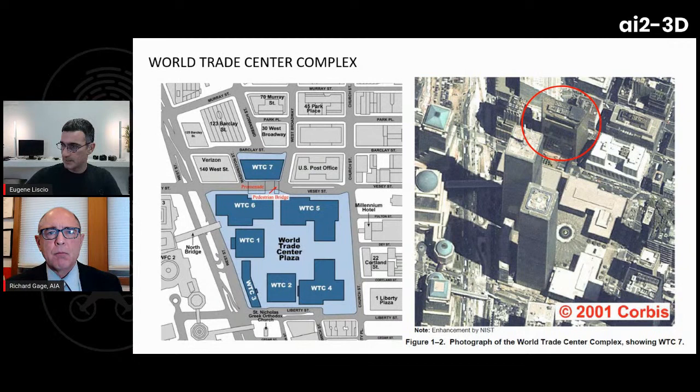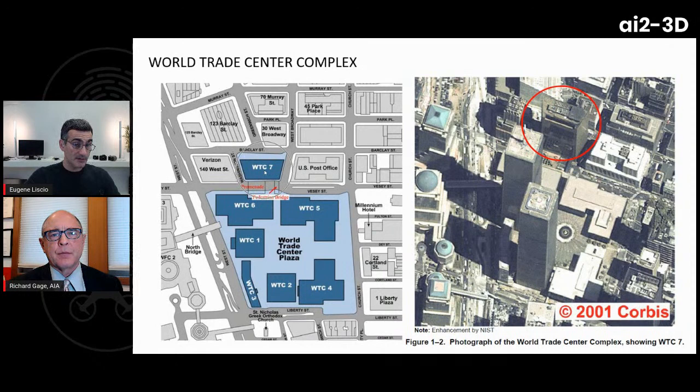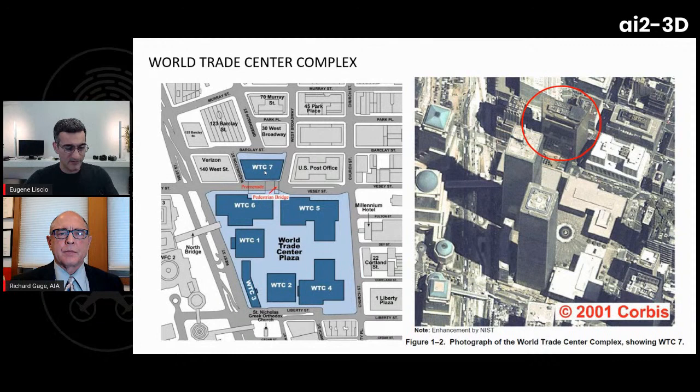The official story is that jet fuel ignited, the fire kept burning, and steel eventually succumbed to the heat. The host provides a timeline for viewers: at 8:46 a.m. American Airlines Flight 11 crashed into the North Tower between floors 93 and 99; at 9:03 a.m. United Airlines Flight 175 crashed into the South Tower between floors 77 and 85. About an hour later the South Tower collapsed, then about half an hour after that the North Tower collapsed. WTC7 didn't collapse until around 5:20 p.m.